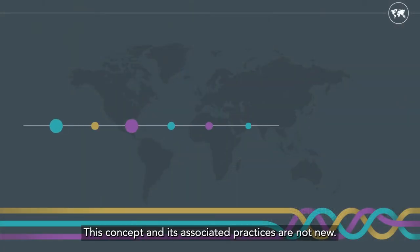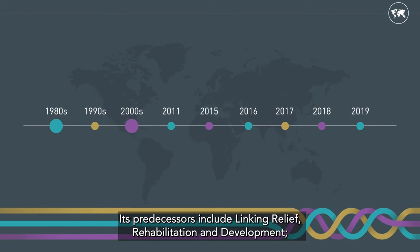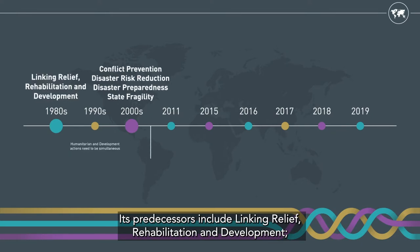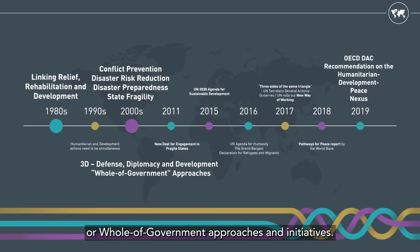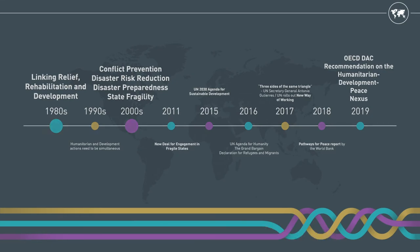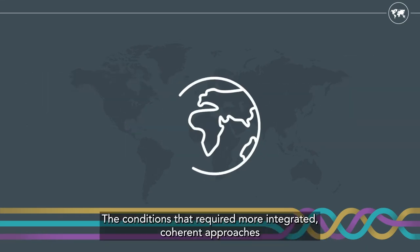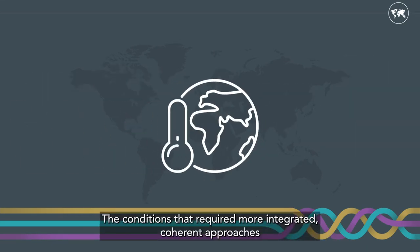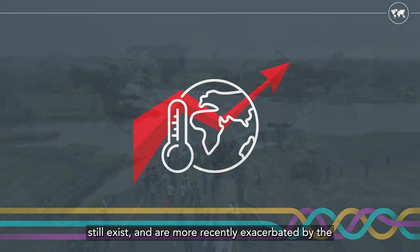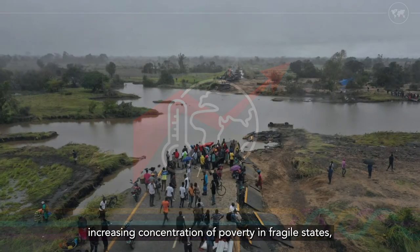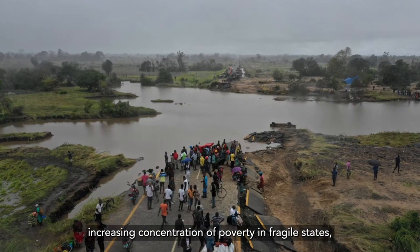This concept and its associated practices are not new. Its predecessors include linking relief, rehabilitation and development, the 3D defence diplomacy and development, or whole-of-government approaches and initiatives. The conditions that required more integrated, coherent approaches still exist, and are more recently exacerbated by the increasing concentration of poverty in fragile states.